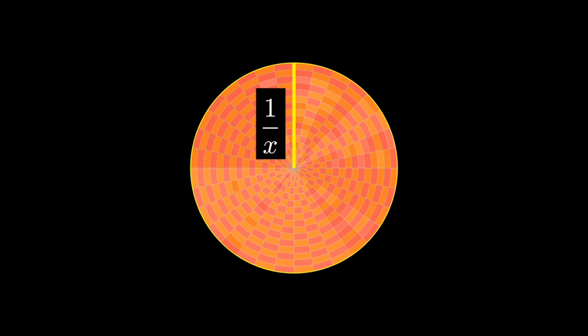And the radius, it's simply the value of the function, which is 1/x. So the volume of one disk is πr²h, which is π times (1/x)² times dx.